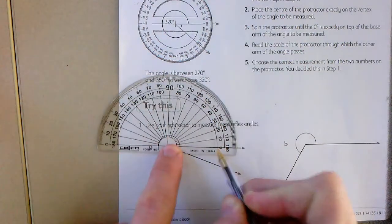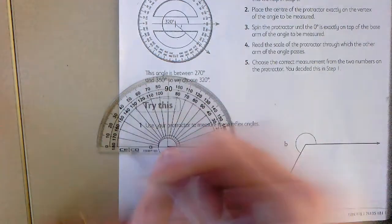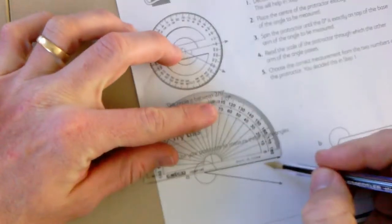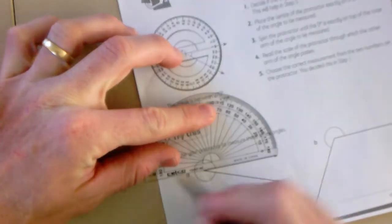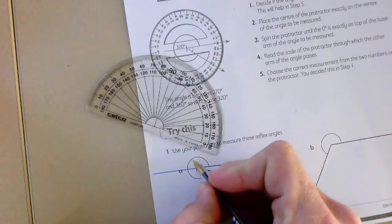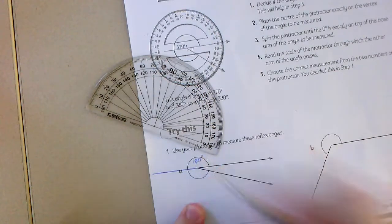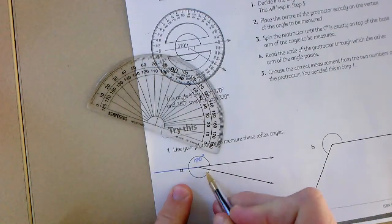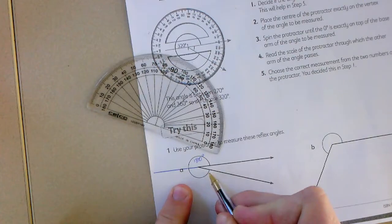So then we go all the way around and we'll know that that will be 180 degrees off here. So we can extend that line out to show where our 180 degrees would come to. So this part of the angle is 180 degrees. Then we need to add this section to it as well.